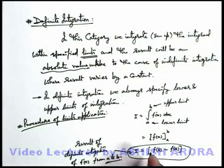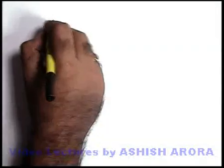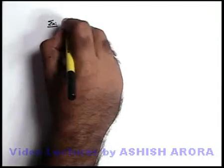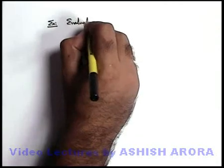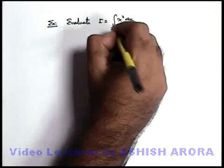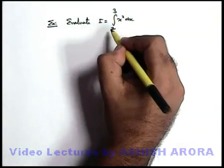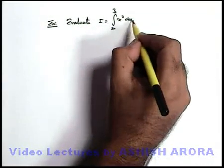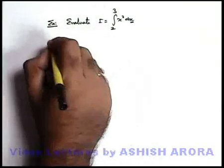So be careful about such type of cases. We'll see some examples to understand the application of limit substitution. If we take up an example on definite integration, say we are required to evaluate I is equal to integration of x square dx within limits from 2 to 3. Always be careful that the limits we are substituting or we are applying, it must be of the variable with respect to which we are carrying out the integration.